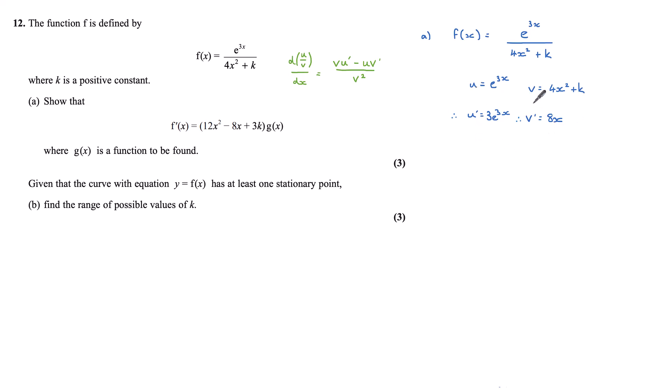Substituting these u's, v's, u dashes and v dashes into my quotient rule, I get that f'(x) equals v u' minus u v' all over v².